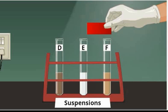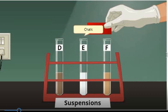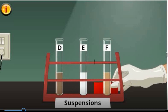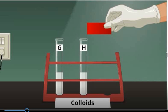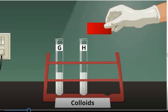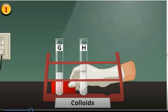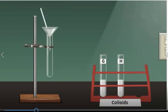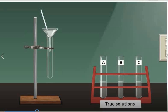Let us try to check the transparency of different suspensions. Here we have soil in water, chalk in water, and fine sand in water. If we put the cellophane paper at the other side of the test tube, we can no longer see it. That is because the suspensions are opaque. How about the transparency of colloids? Here we have colloidal starch in water and egg albumin in water. Notice that the cellophane paper in test tube G and H is somewhat visible. That only shows mixture G and mixture H are translucent.